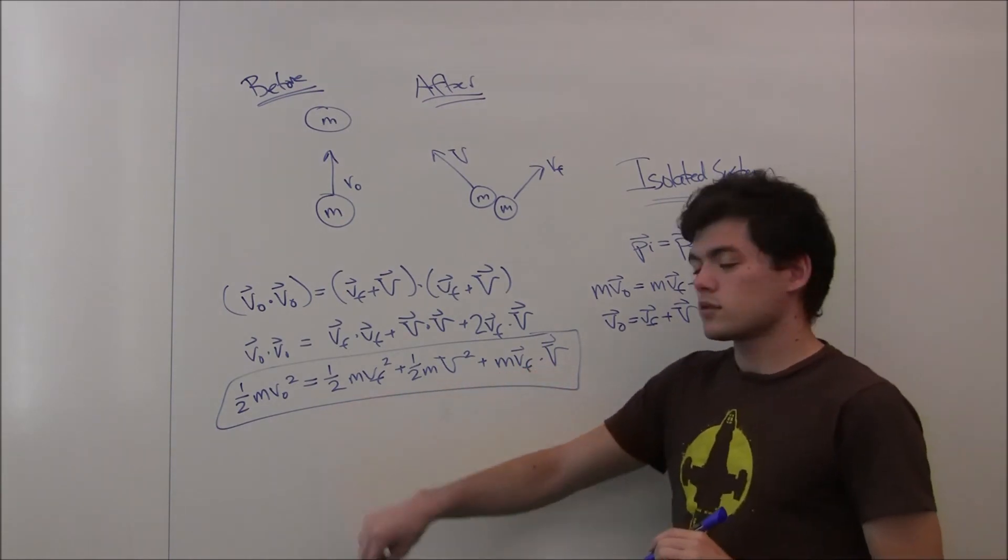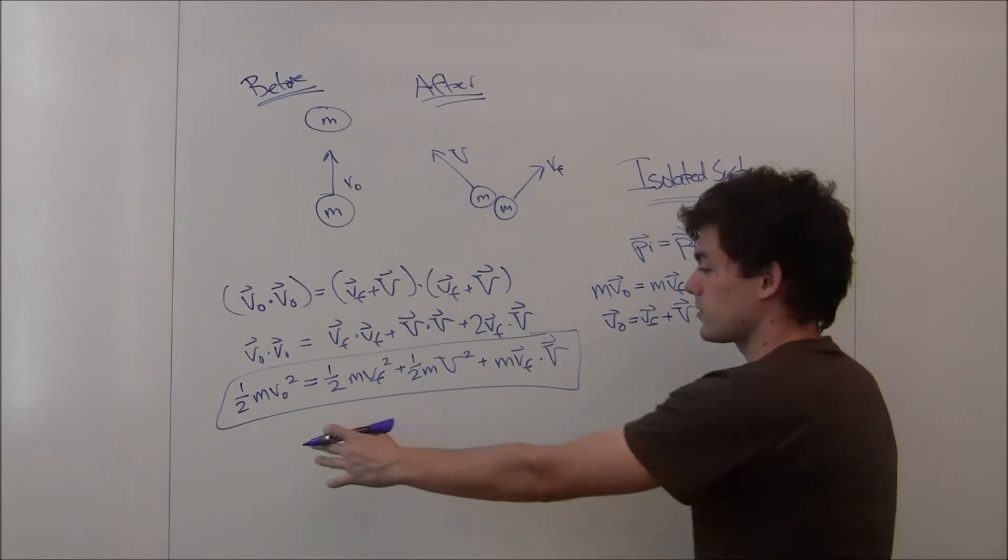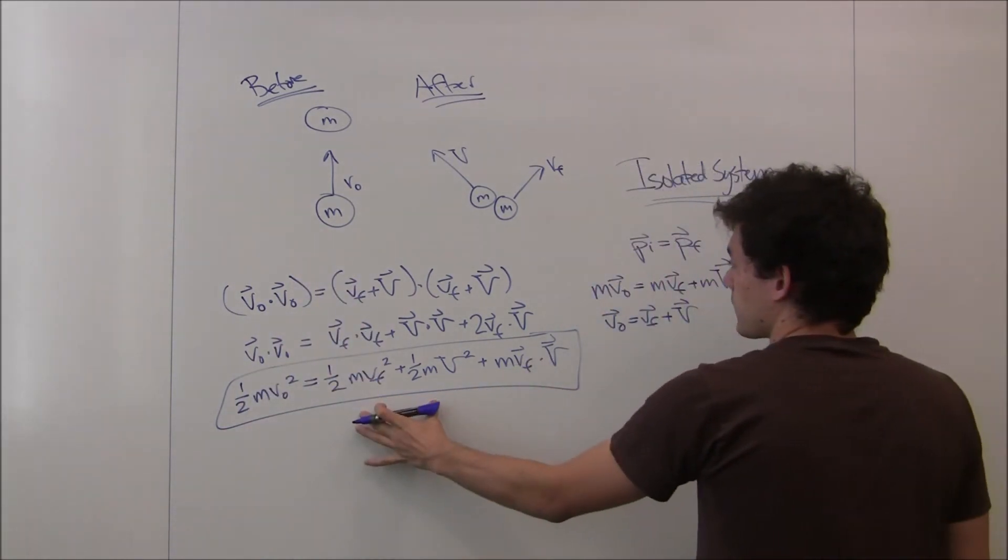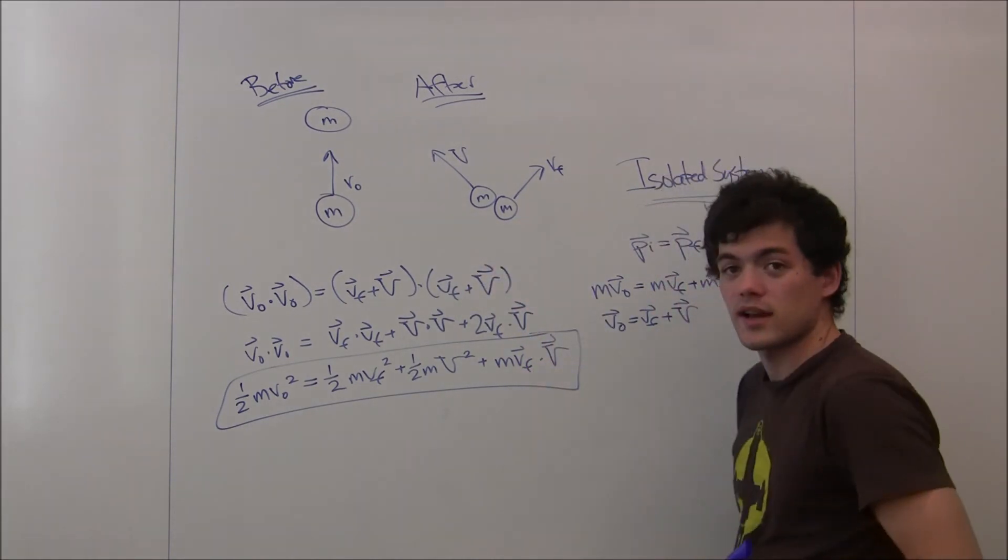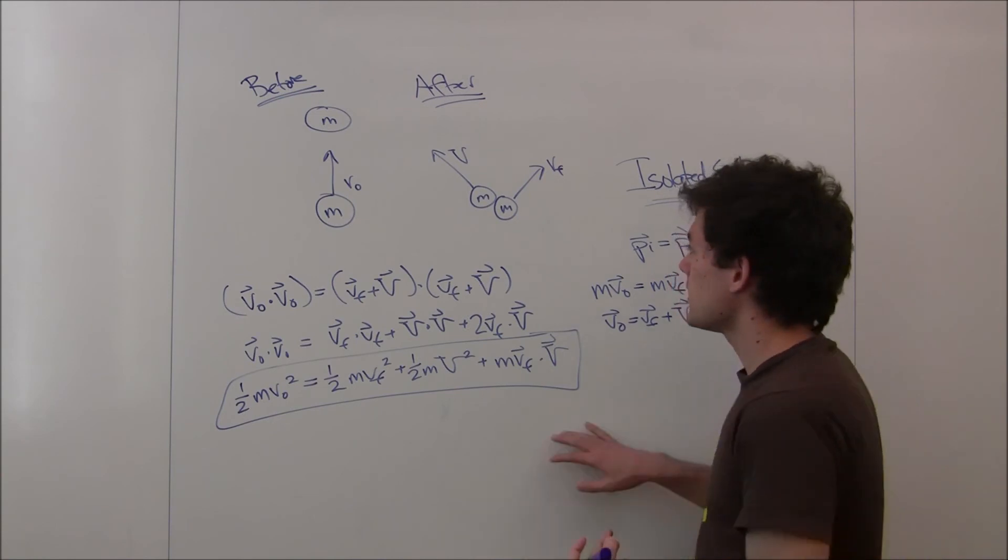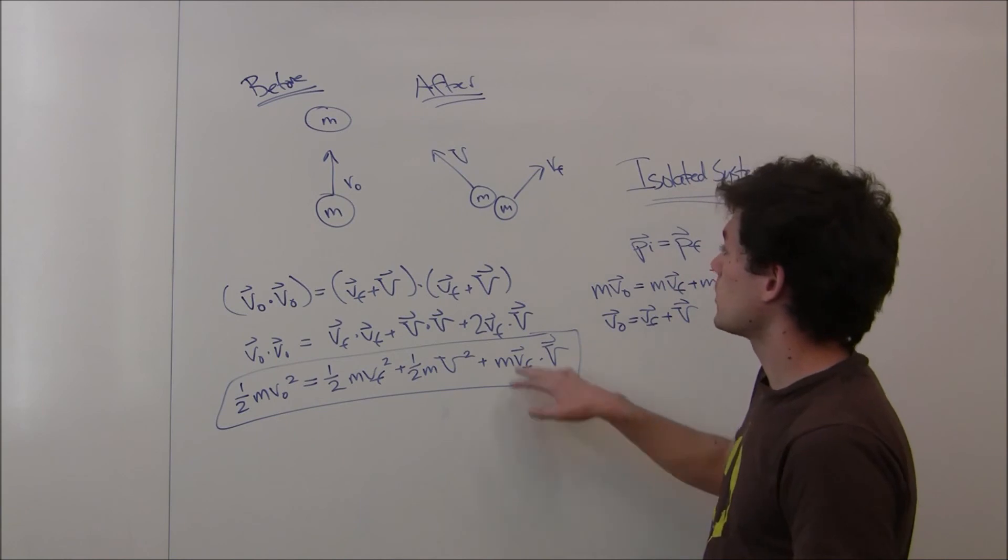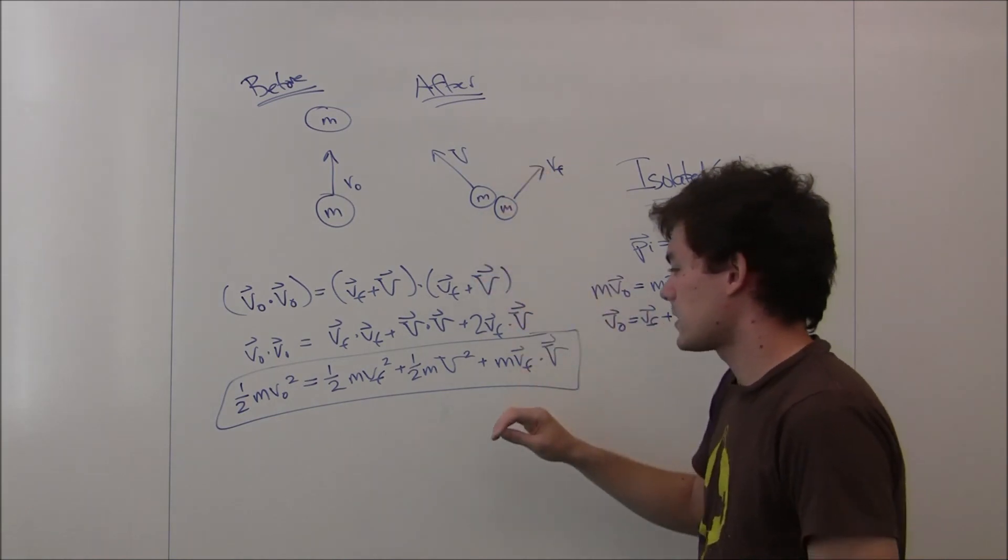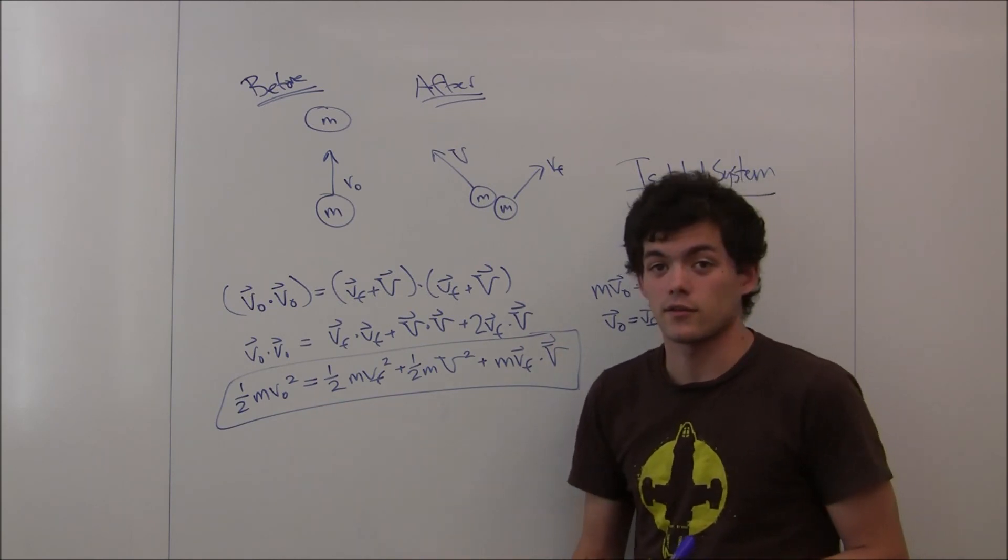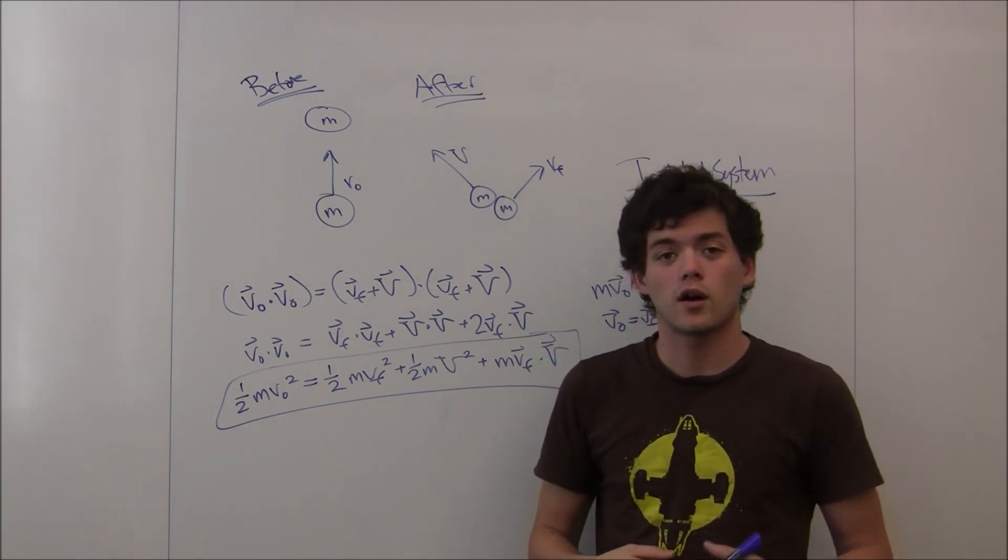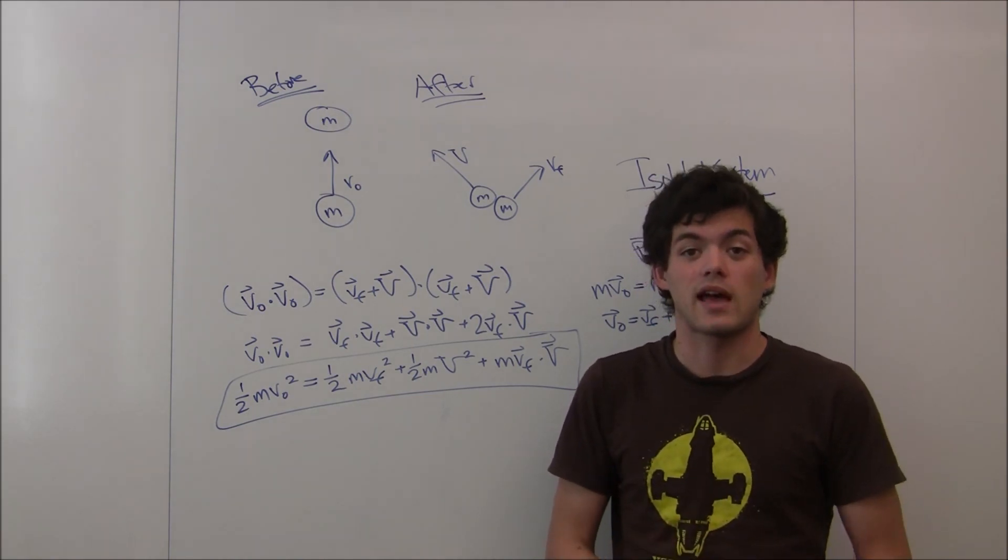So looking at this equation, it should be pretty clear that these are all energy expressions. So this is the initial energy of the cue ball, and these are the final energies of the cue ball and the object ball. And so since v final dotted with big V is going to be 0 if and only if there is a 90 degree angle between them, we know that the two balls are going to move off at a 90 degree angle if and only if this is 0, and thus energy is conserved. So a cue ball and an object ball will move off at a 90 degree angle if the collision between the two balls is approximately elastic.